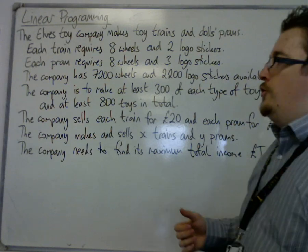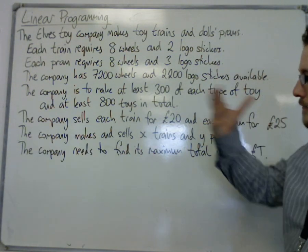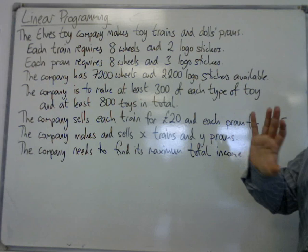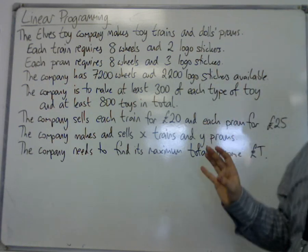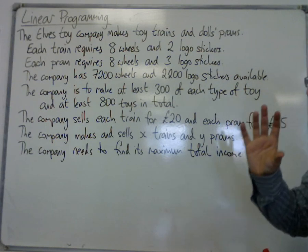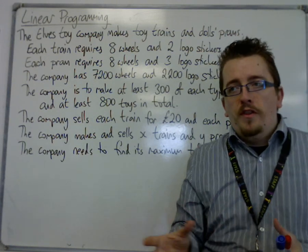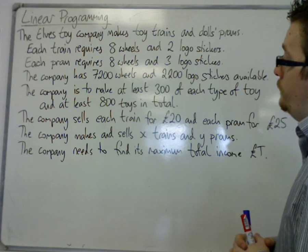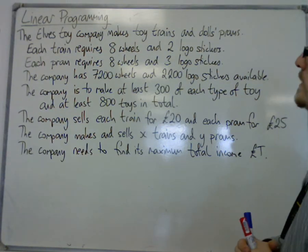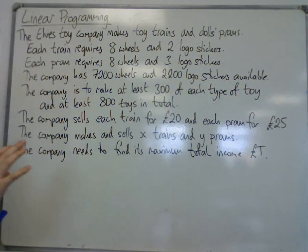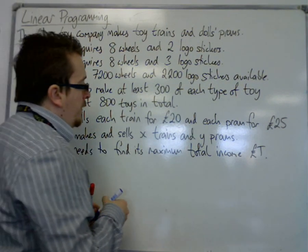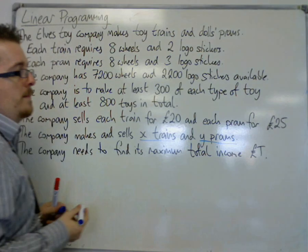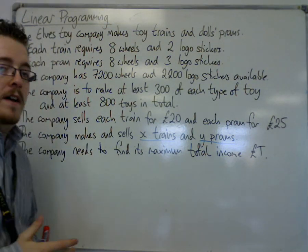So the actual situation doesn't really make much difference to us. But in this case, we have the Elves Toy Company, which makes toy trains and doll prams, and the wheels and logo stickers on these trains and prams are the same. First, we check what X and Y represent: X tells us how many trains there are and Y tells us how many prams — it's important that you make note of that first.